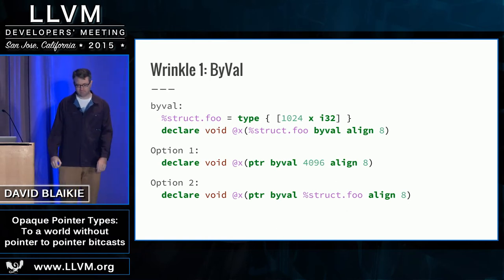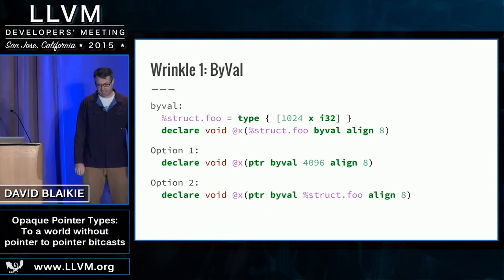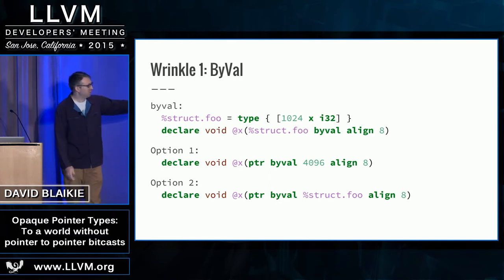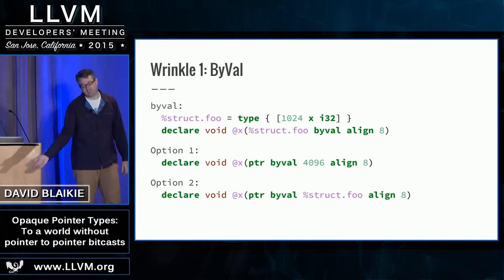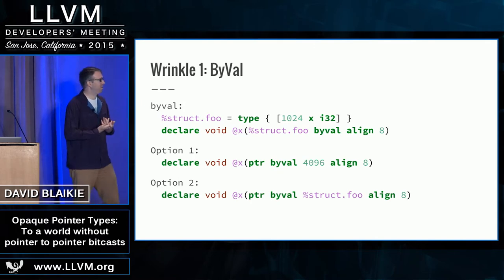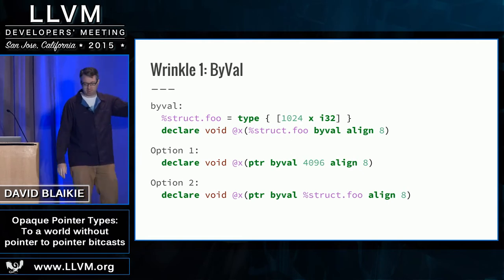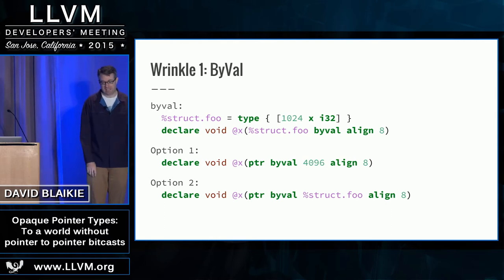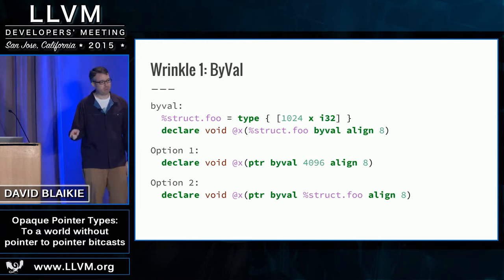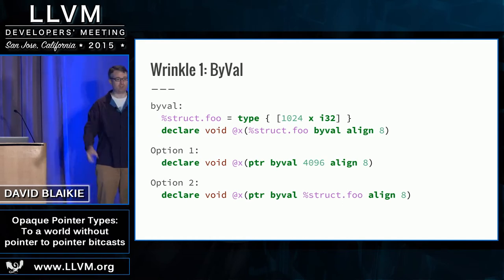We'll lose the pointee element type, so we won't know what to copy — how many bytes do we need? We could represent it in a couple of different ways. We haven't really decided which one. We could have byval take a number of bytes, or byval take the type — just move the type from one place to another. The type looks more natural; it's what we've been used to dealing with. The number of bytes is the practical reality of what this represents. Attributes already support integer parameters; they don't support type parameters. But I do not look forward to trying to do the transformation to update all the test cases for that, because I'm not going to be able to do that with any kind of regex — there's nothing that tells me how many bytes that struct represents.